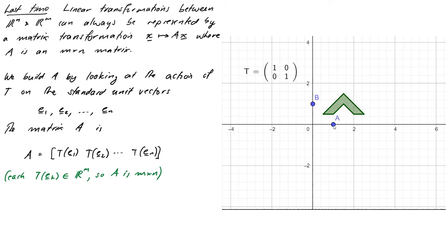If I move (1,0) to (2,0), the first column of my matrix becomes (2,0) — and you can see it does indeed. We can also see what's happening geometrically by looking at this triangular shape here. Any point on that shape as a position vector gets mapped to the corresponding point on the green shape, under the transformation defined by this matrix T. Let's play around with a few settings and see what we can produce.